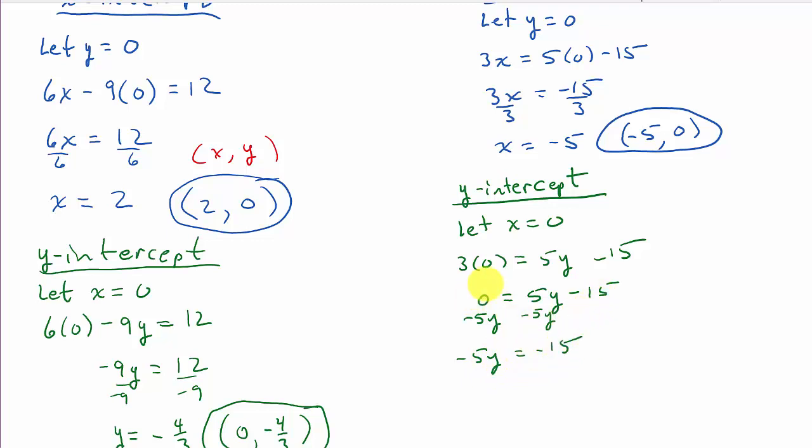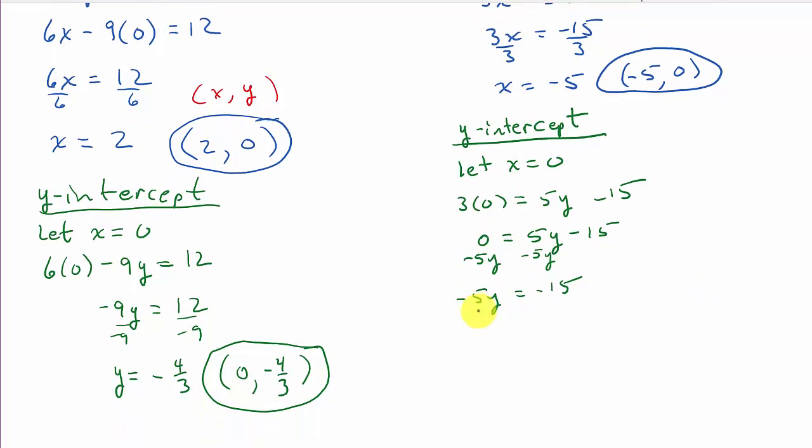And yes, if you wanted to, you could have added 15 to both sides. It doesn't matter. I'll divide both sides by negative 5, and I get y equals 3. So my y intercept, remember, x, y. So my x was 0, and my y is 3.